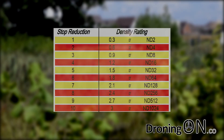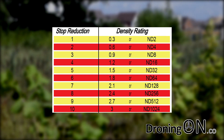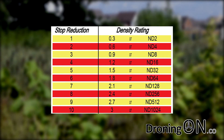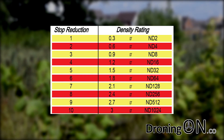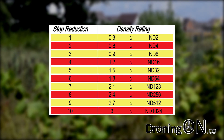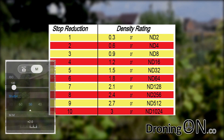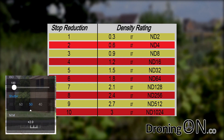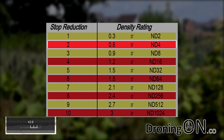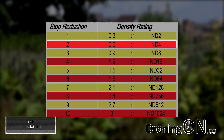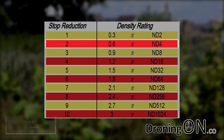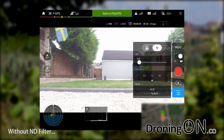ND filters are named accordingly: an ND4 filter is known as a two-stop, and an ND8 filter is known as a three-stop. As we are plus two overexposed, that indicates I need to attach an ND4 filter, and that's what I'll do now.